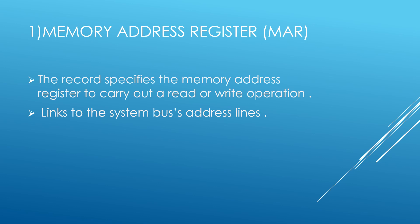The MAR is connected to the address lines of the system bus, which facilitates communication between different components in the computer system. The CPU specifies the address of the data it wants to access in the MAR, and the MAR is used to specify the memory address for read or write operations initiated by the CPU. The specified memory address is used to retrieve or store data in memory.